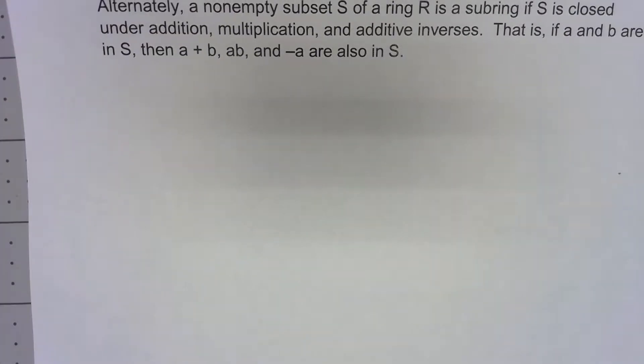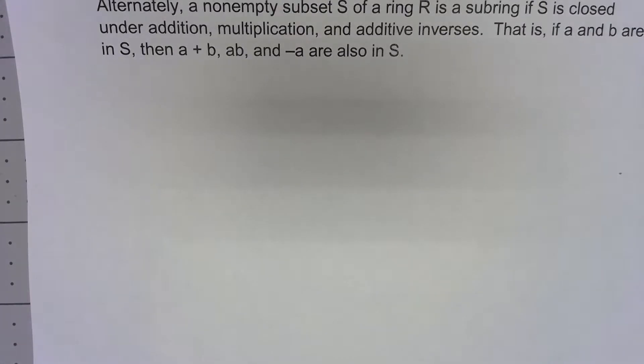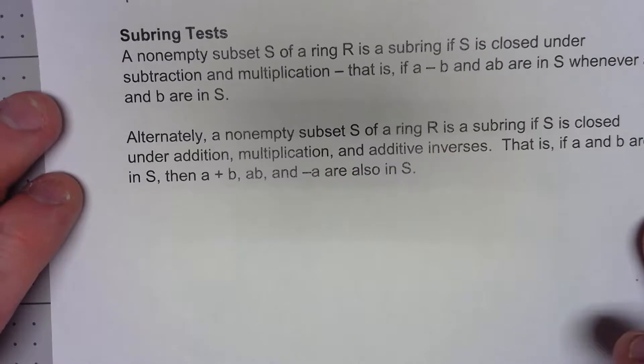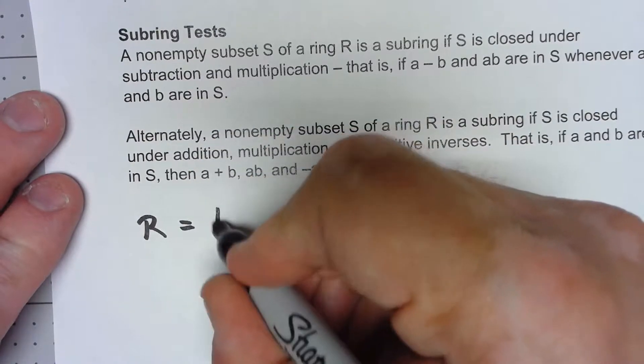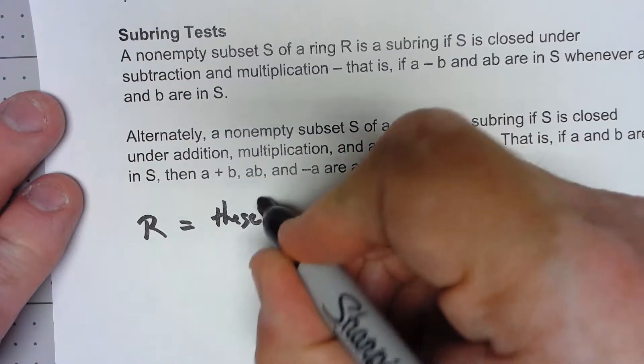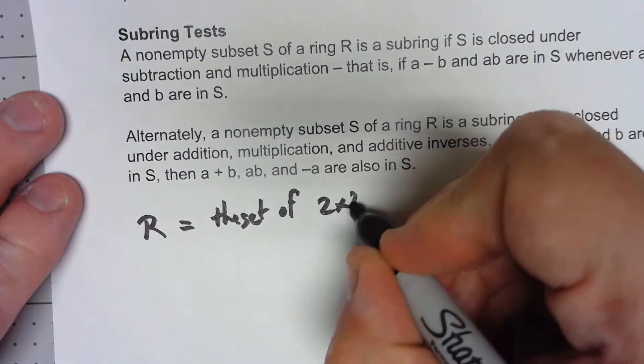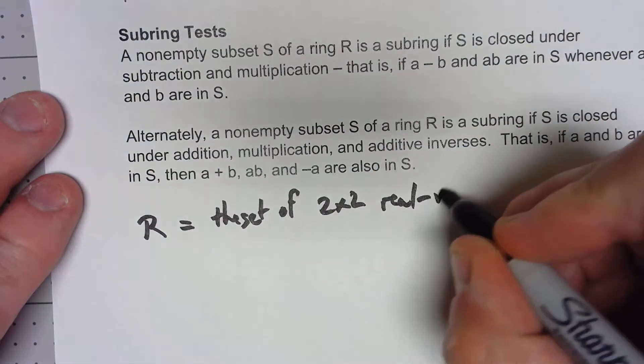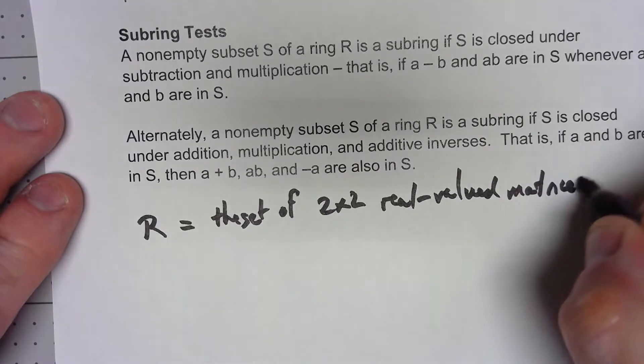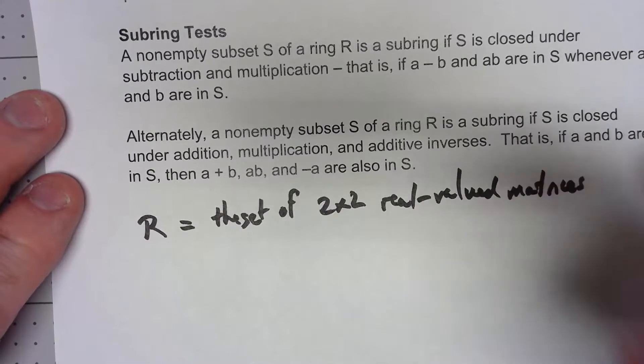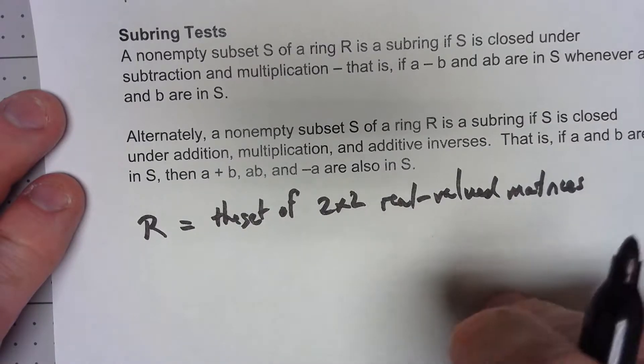Let's take a look at a couple of examples, and let's do one each way. So let's say that first of all my ring R is the set of 2x2 real-valued matrices. This was actually in video 12.1 where we talked about that this was in fact a ring.